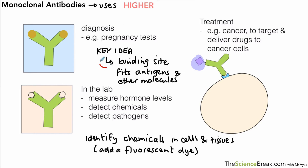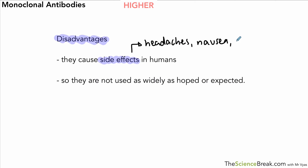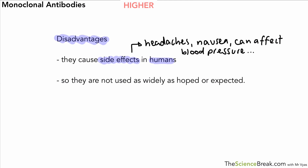There are quite a lot of benefits of using monoclonal antibodies, but there are also a couple of disadvantages. The first is that they cause side effects in humans, which is why they haven't been used as widely as hoped. These side effects include headaches, nausea, changes in blood pressure, rashes, and fever. These have been some of the recorded side effects of using monoclonal antibodies in humans. Thank you for watching and I'll see you again soon.